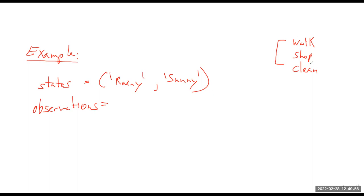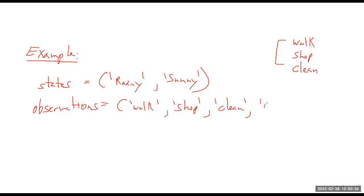Then there are the observations — what we're trying to learn is a mapping between states and observations. As far as observations, we have three options: you can walk, you can shop, or you can clean. These are the activities you would do that day, and they're dependent upon the weather. Another classic variant uses weather and ice cream consumption, but this example is a bit more interesting.